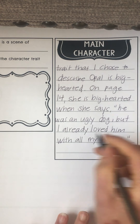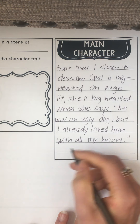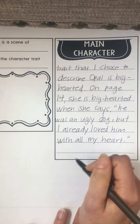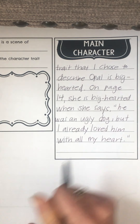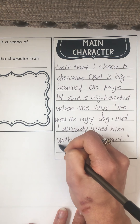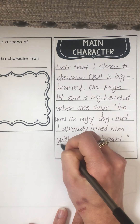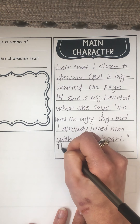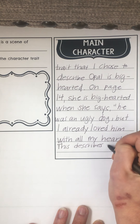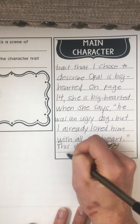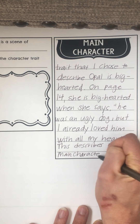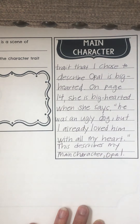I have one more line left, so I'm gonna think about how I want to end it — what should my conclusion sentence be? I'm gonna write it a little smaller just so I can stay on this page for my example. I might say, 'This describes my main character Opal.' I'm just keeping it simple.